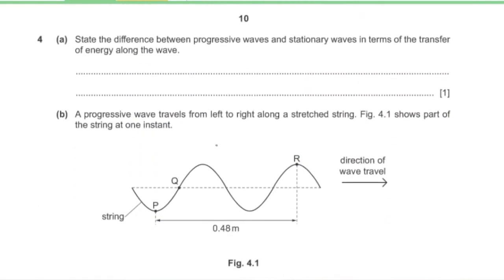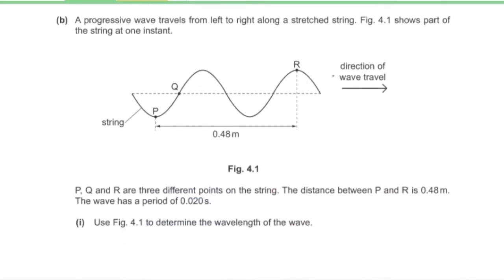Question 4, part A: state the difference between progressive waves and stationary waves in terms of energy transfer. Progressive waves transfer energy along the wave, while stationary waves do not transfer energy.